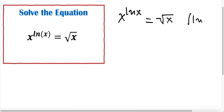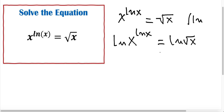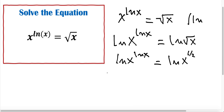We're taking ln of both sides, and we have ln of x to the exponent ln x is equal to ln of the square root of x. And now, instead of the square root of x, we are writing x to the power of 1 over 2.